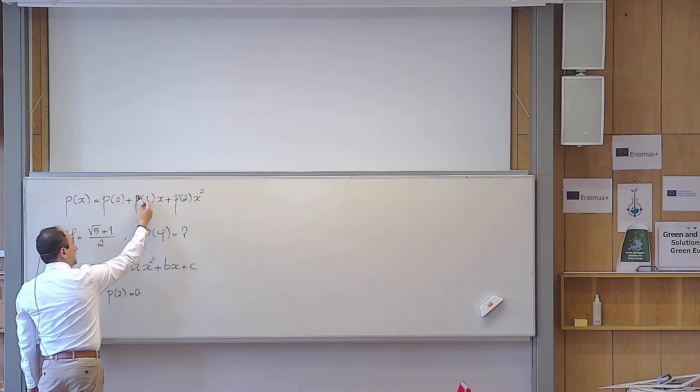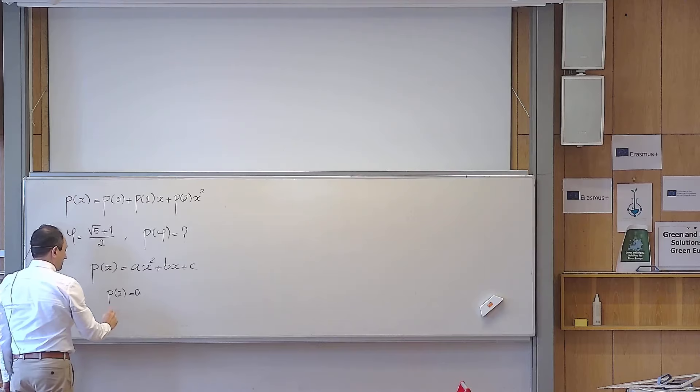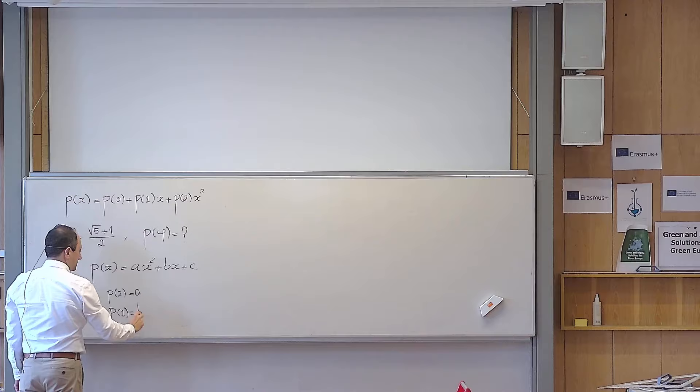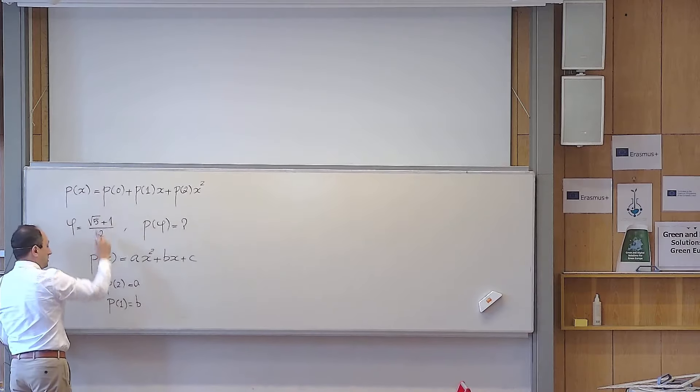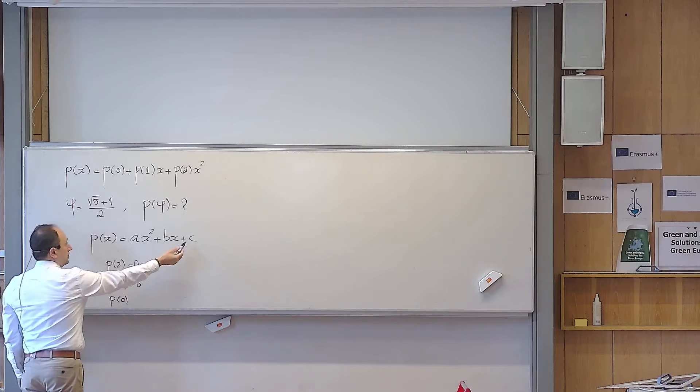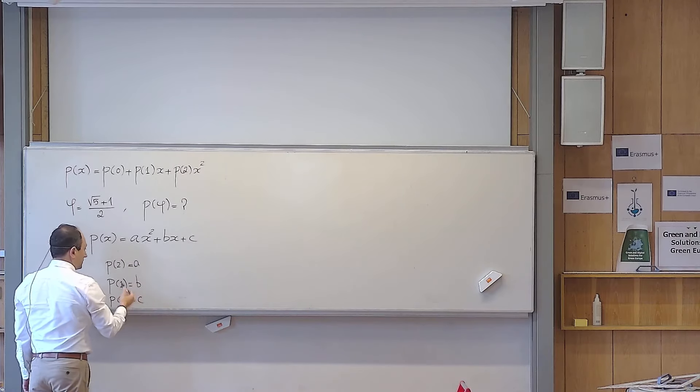And the coefficient of x, which is P(1), should be equal to the coefficient of x here, which is b. And finally, the constant term P(0) should match with the constant term of my polynomial. So this is what I get.